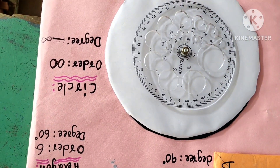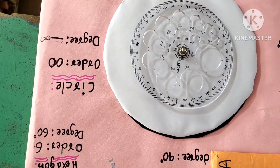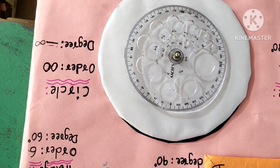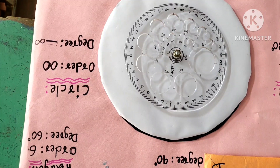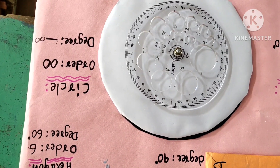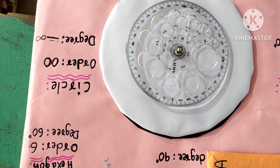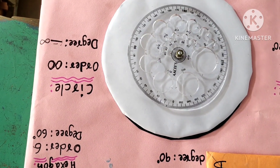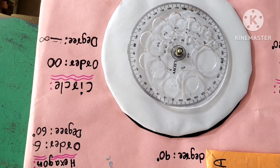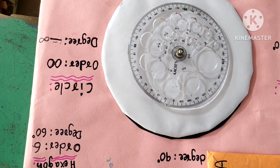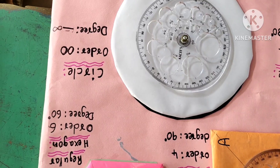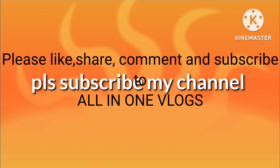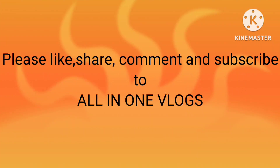Circle: Take a circle sheet and keep a full protractor on it. Now rotate — after each rotation we will see that the circle is exactly the same as before. So the order of rotational symmetry is infinity and the degree of rotational symmetry is also infinity. Thank you.